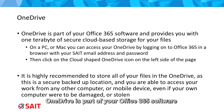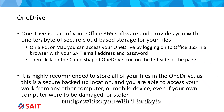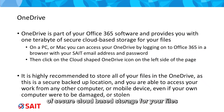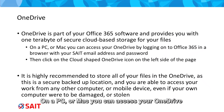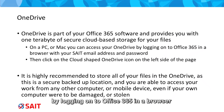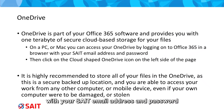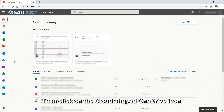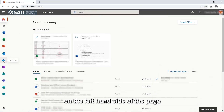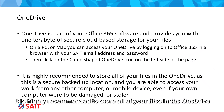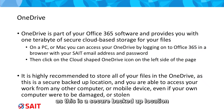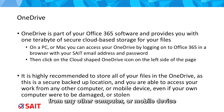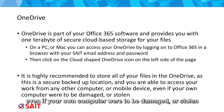OneDrive is part of your Office 365 software and provides you with one terabyte of secure cloud-based storage for your files. On a PC or Mac, you can access your OneDrive by logging on to Office 365 in a browser with your SAIT email address and password, then clicking on the cloud-shaped OneDrive icon on the left-hand side of the page. It is highly recommended to store all of your files in OneDrive, as this is a secure, backed-up location, and you are able to access your work from any other computer or mobile device, even if your own computer were to be damaged or stolen.